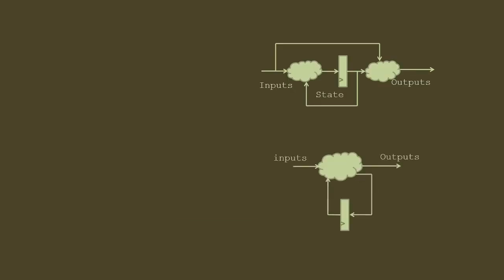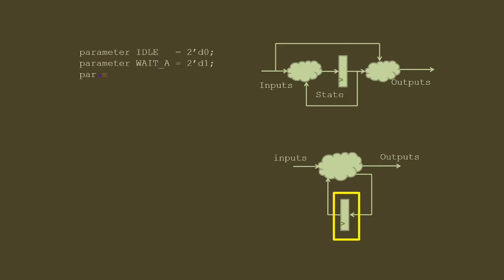This block diagram shows combinational logic and a register. The next state is a function of input and current state, and the output is also a function of current state and input. To write the Verilog code we need to write the register block and the combinational block. For the register we use always at posedge clock.